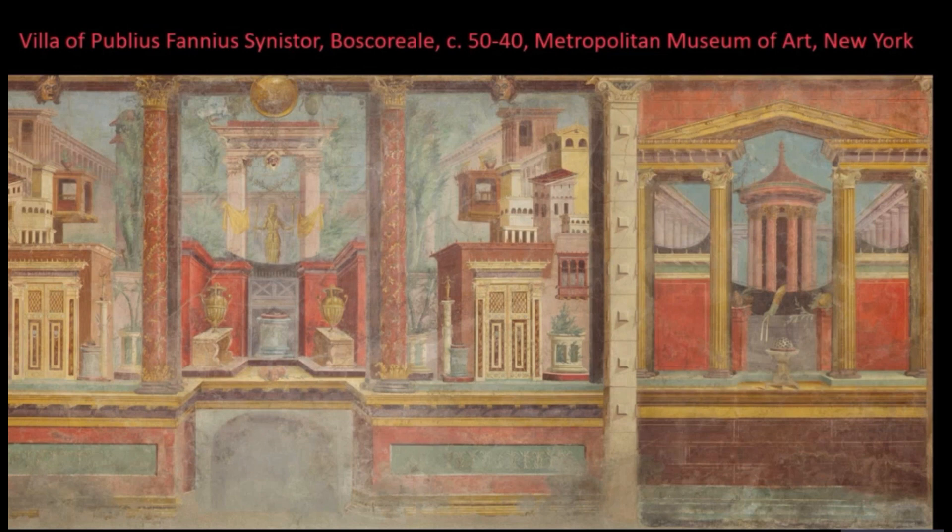This is a Roman fresco from the first century, now in the Met Museum in New York. It shows that Roman painters were preoccupied with creating the illusion of accurate space on a flat surface — a foreground, a middle ground, and a background.